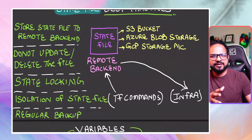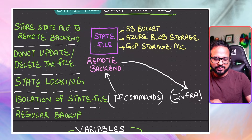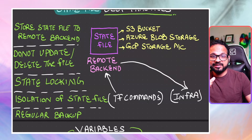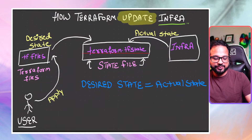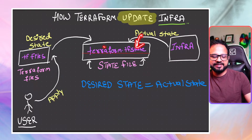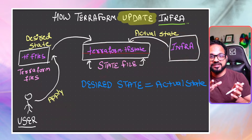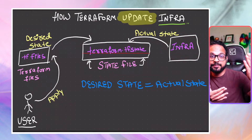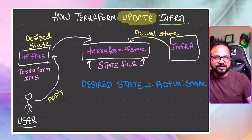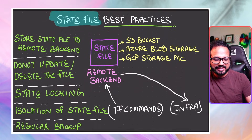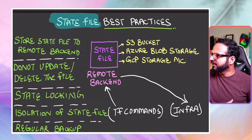Isolation of the state file is another best practice - for different environments you can create separate state files to keep them separate. You also have to regularly back up this file, because accidental deletion or corruption means your infrastructure state will be lost. For example, if you have provisioned infra resources with Terraform and then deleted the state file, Terraform would not know the actual state of your infrastructure. Whenever you make changes it will not apply them to existing resources, because for Terraform those resources were not created by Terraform - you would have to import them again, which is a complex process. So avoid that at any cost.